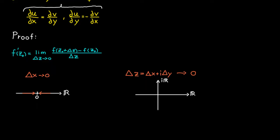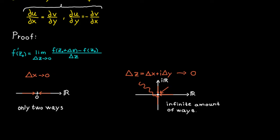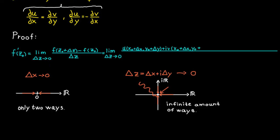If we want to approach zero in the complex plane, we can do it in many more ways — from above, from below, from the right, or even along a curved path. They're all valid paths that get closer and closer to zero. This means there are infinitely many ways to approach zero, and all of these paths must agree for a limit to exist. To prove this theorem we are simply going to let two specific paths be equal to each other. But first we rewrite our original expression for the derivative using the fact that delta c equals delta x plus i delta y.